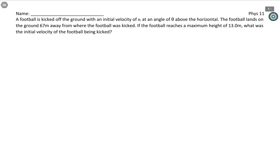Let's read the problem together. A football is kicked off the ground with an initial velocity vi, so we're not given the initial velocity, and an angle of theta above the horizontal. The football lands on the ground 67 meters away from where the football was kicked. If the football reaches a maximum height of 13 meters, what was the initial velocity of the football being kicked?